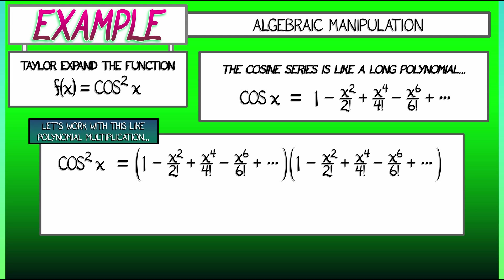Now, if we do the first, 1 times 1, that's 1. That's OK. But the next highest term in terms of degree is going to be quadratic. And I have a 1 times minus x squared over 2 factorial, and then a minus x squared over 2 factorial times 1. That gives me minus 2 times x squared over 2 factorial. And now I've got to keep going. This is maybe not so nice to do after all.